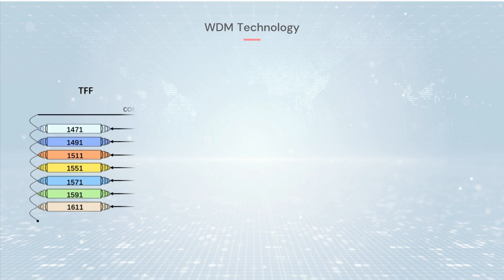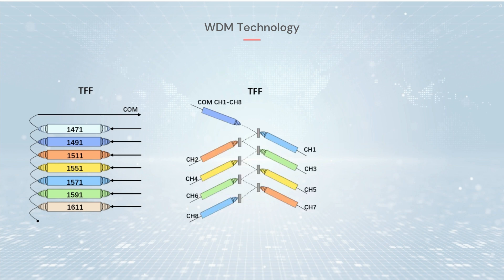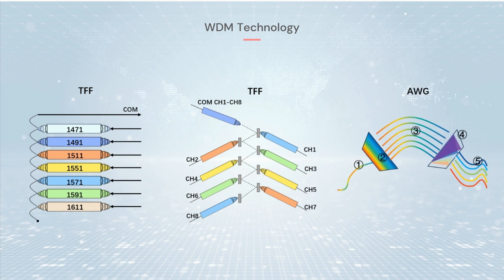Both of these WDM technologies are widely used in optical communication systems. It is generally believed that AWG has a higher cost effectiveness in long distance, high channel capacity DWDM applications, while TFF is more ideal for low channel capacity CWDM metropolitan applications.